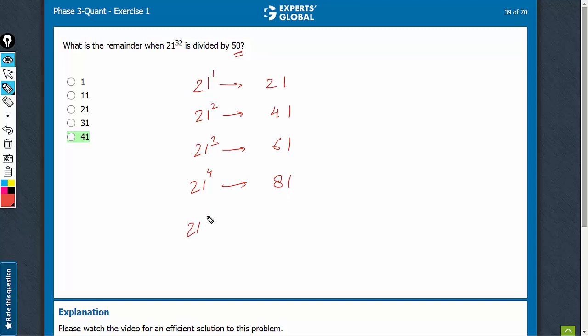Then, 21 raised to power 5, do 81 into 21. That would give you 01 as the last two digits.